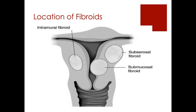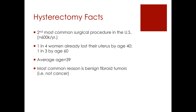Some facts about hysterectomy: it's the second most common surgery performed in the United States, which is staggering because half the population — men — aren't even eligible. Over 600,000 hysterectomies are done every year. One of every four women in this country has already lost their uterus by age 40, and one of every three by age 60. The average age of a woman undergoing hysterectomy is less than 40 years. The number one reason is fibroids — and as I said, it's completely unnecessary to operate on these young women for a benign indication.